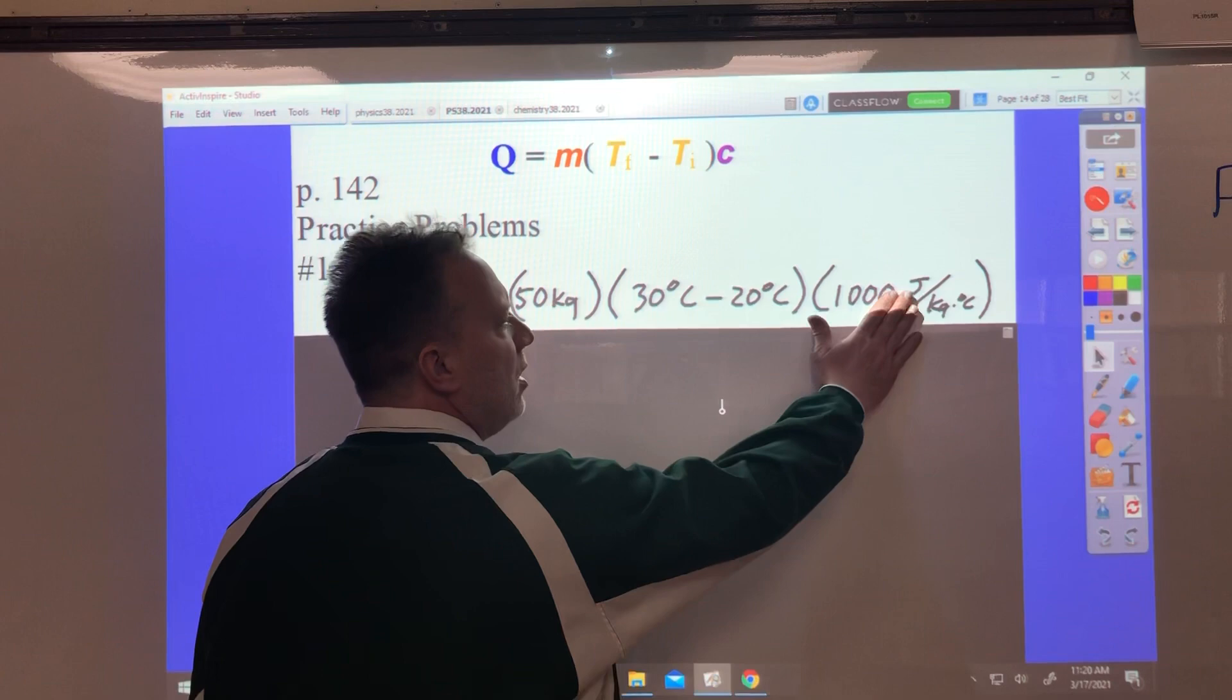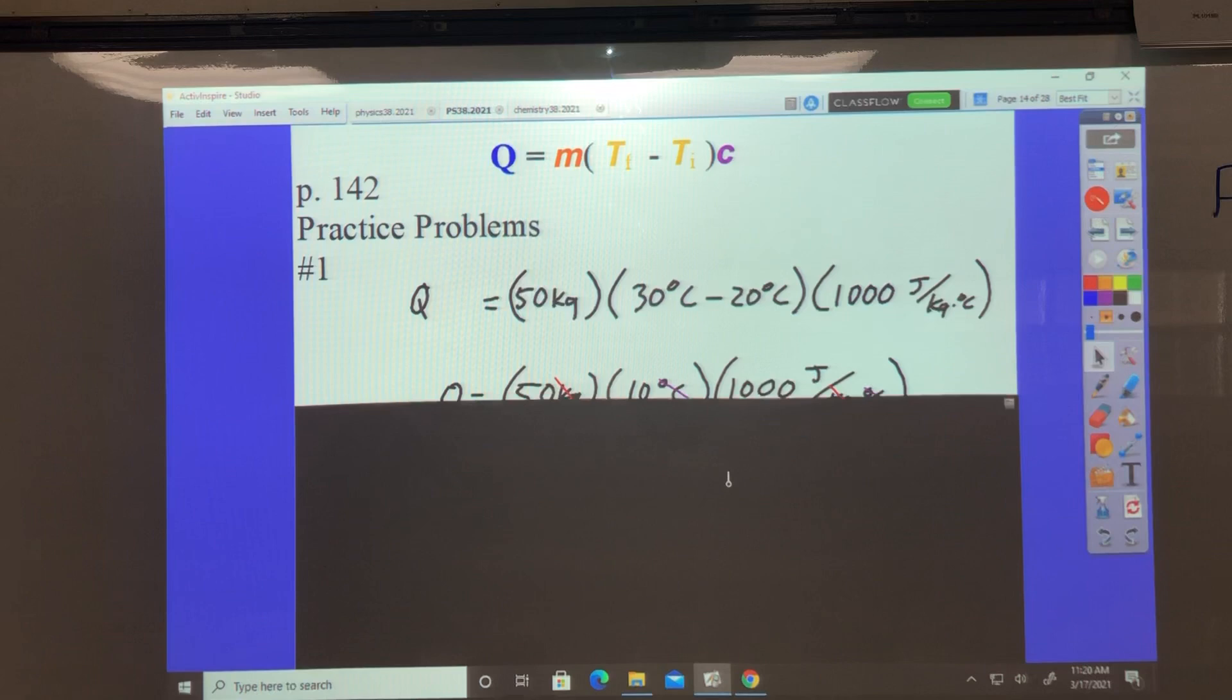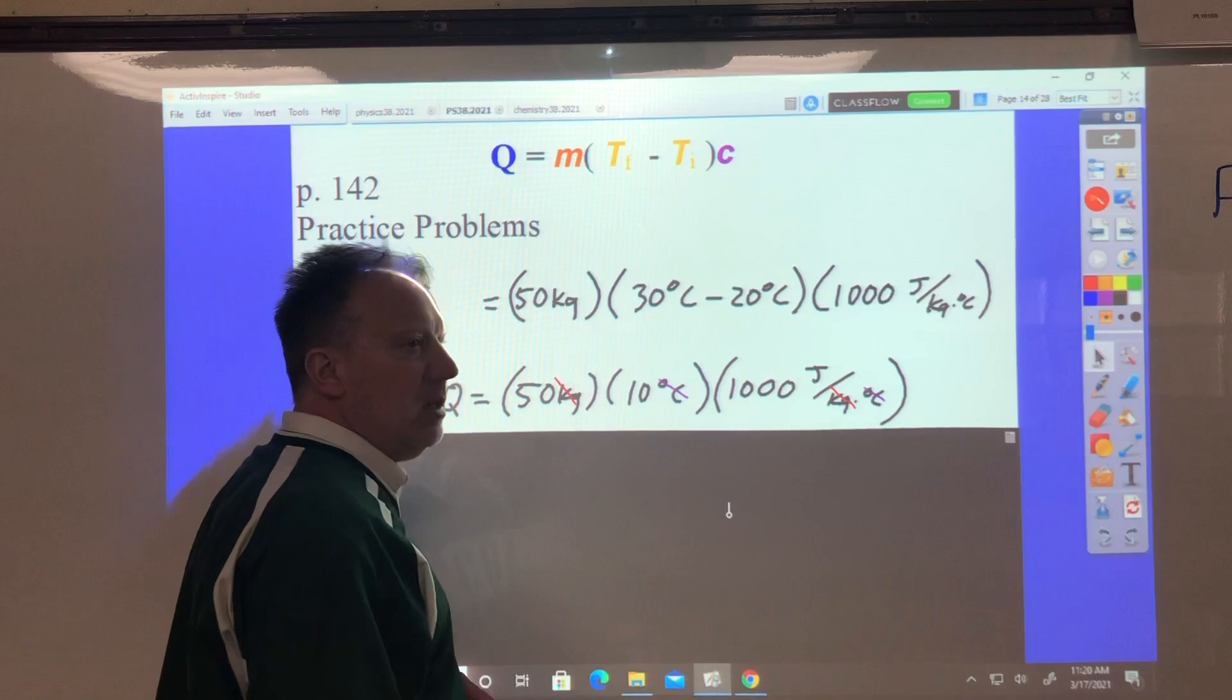Well, you do the stuff inside the parentheses. There's nothing to do here, nothing to do here, but there's a subtraction there. So we have to do that first. And when you subtract 30 minus 20, you get 10.